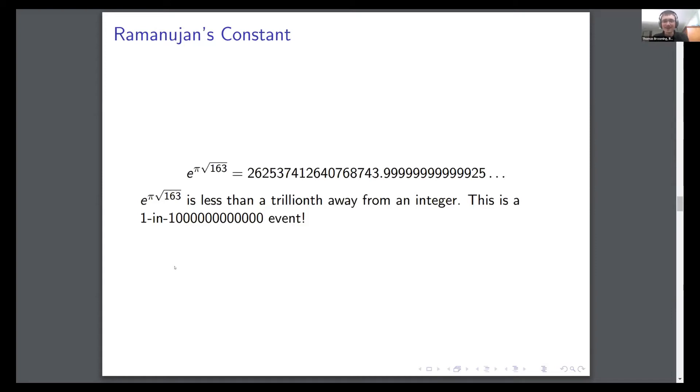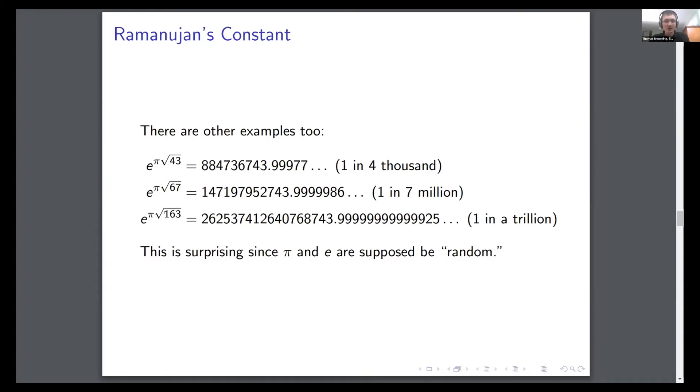If you think about this randomly, if you pick a random number, the probability that it's this close to an integer without actually being an integer is like one in a trillion, which is incredibly unlikely. So this is not something you'd expect to see at all. And it's especially unlikely considering it's a fairly simple number that we're looking at. It doesn't look terribly contrived. The other interesting thing is there are actually other examples.